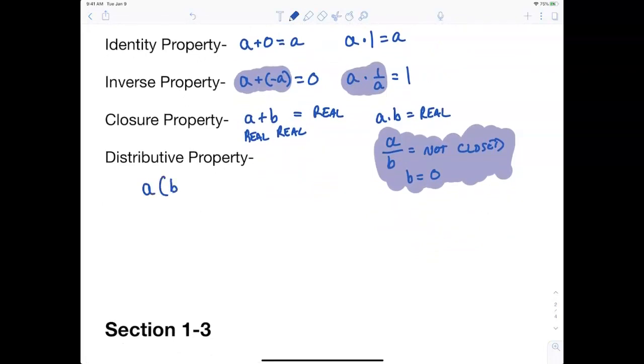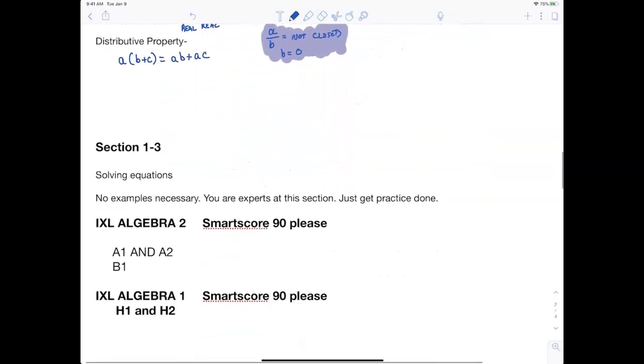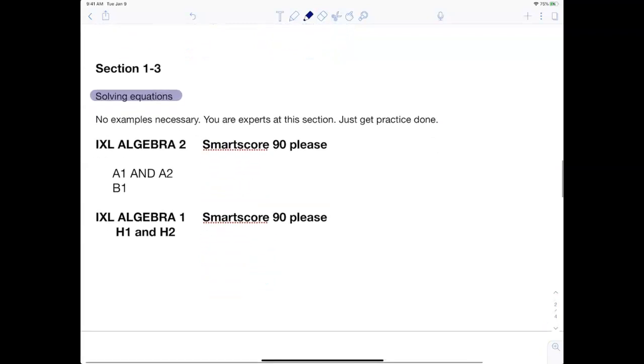So that's it for 1-2. Section 1-3 is just solving equations. You guys are experts on solving equations, so I don't really need to explain anything on that. I just want you to work hard on the IXL and knock that out. Now I want to talk about the IXL. You're expected to go to Algebra 2, IXL now, and do A1 and A2 and B1, and what's going to happen is I'm going to grade that to make sure you understand what we're doing. However, I did not find a good one for the properties, so I wanted you to go back to Algebra 1 and do H1 and H2. This is probably the only time we're going to go back to Algebra 1. I need you to go to Algebra 1 and do H1 and H2.